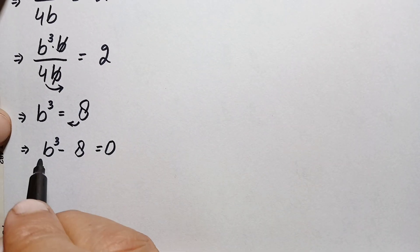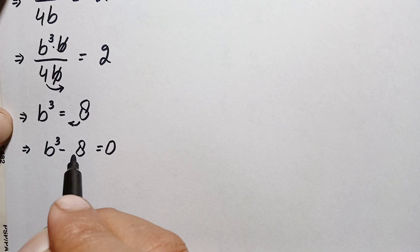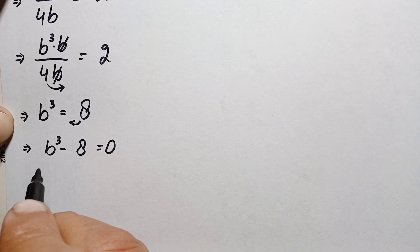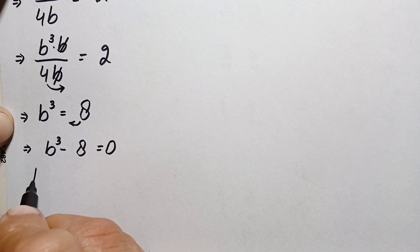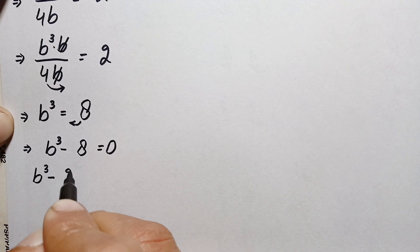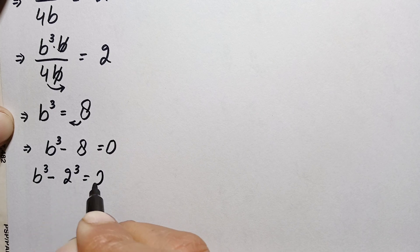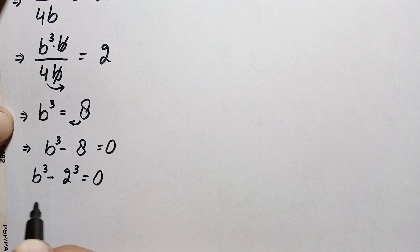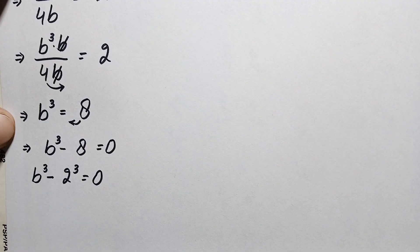The first term is in cubic form. We can write 8 as 2 times 2 times 2, which is 2 cubed. So the left hand side becomes b cubed minus 2 cubed equals zero. Both terms are now in cubic form.